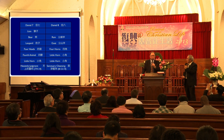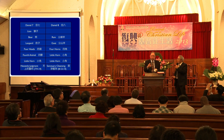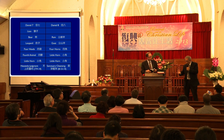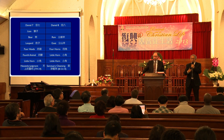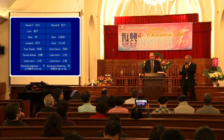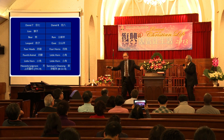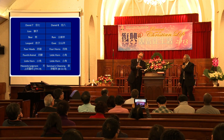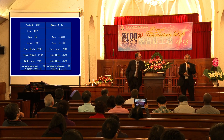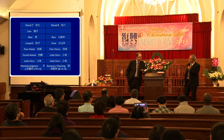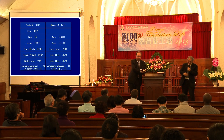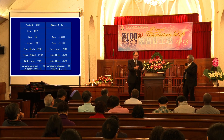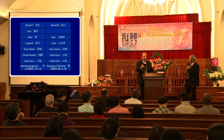Finally they understood that the problem was not with the date. In fact, something important happened on October 22, 1844 — but it was not the second coming of Christ. The sanctuary here is not the earth; the sanctuary here is located in heaven. And so in the scriptures they understood the two-phased ministry of Christ in the heavenly sanctuary.